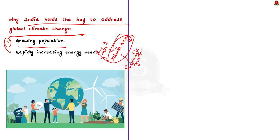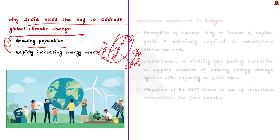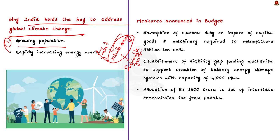Because of these two reasons it is said that India holds the key to achieve global climate change targets. India, recognizing this role, committed at COP26 to become carbon neutral by 2070. India has taken various steps to address climate change, and in the recent budget also, India took some important steps.